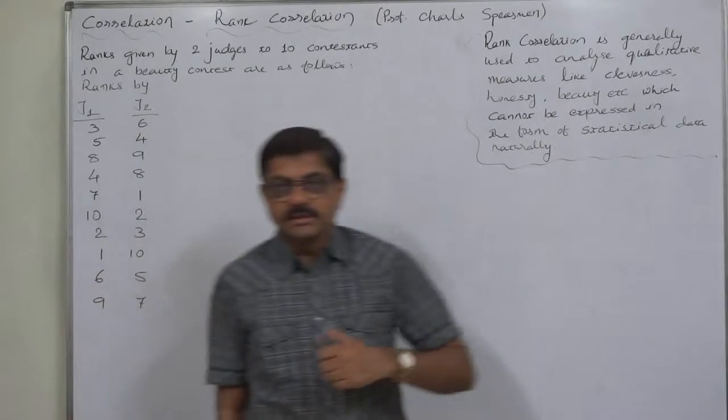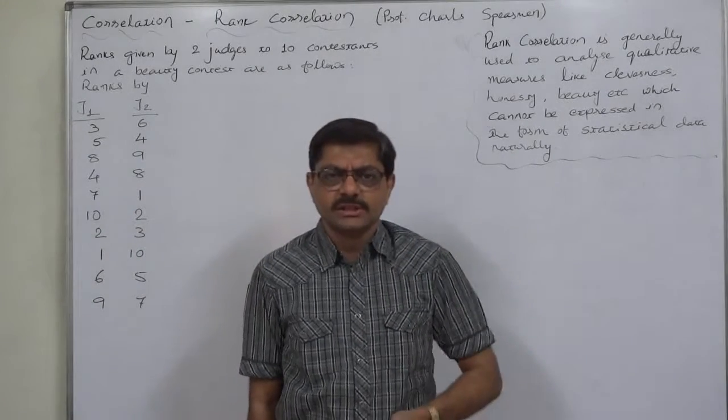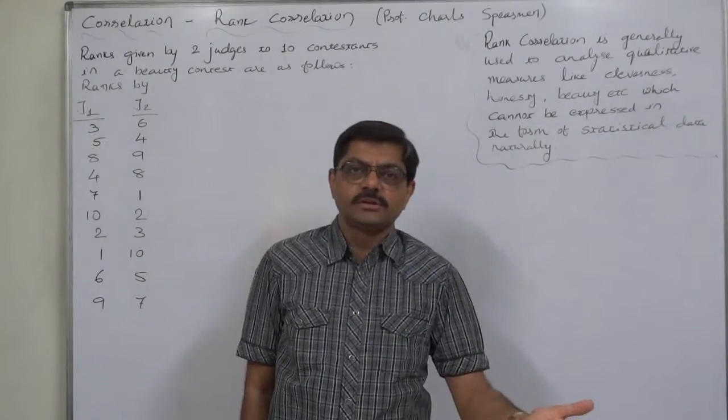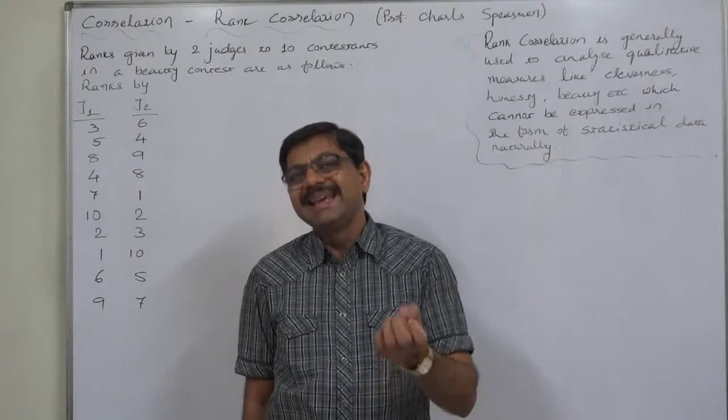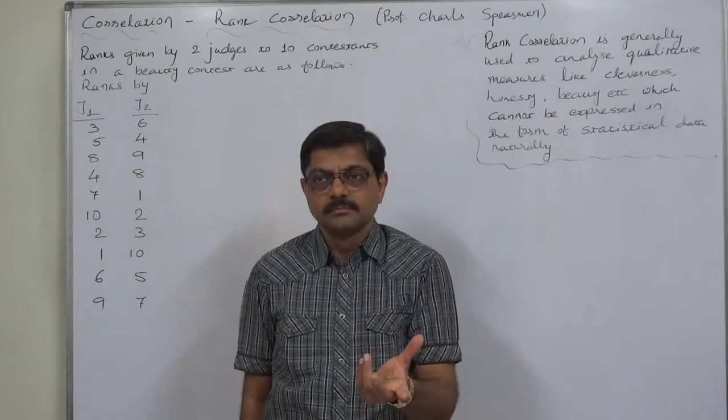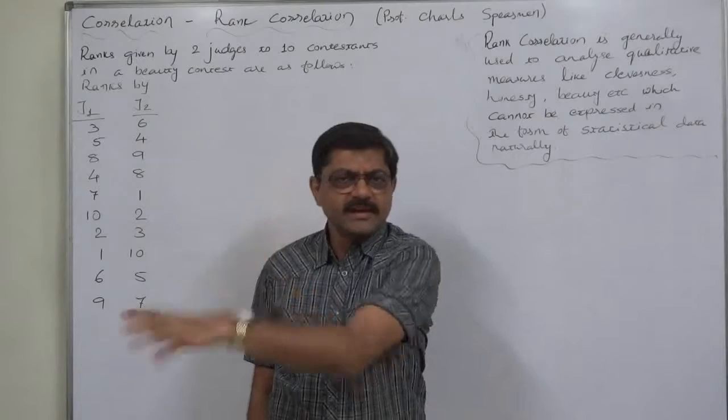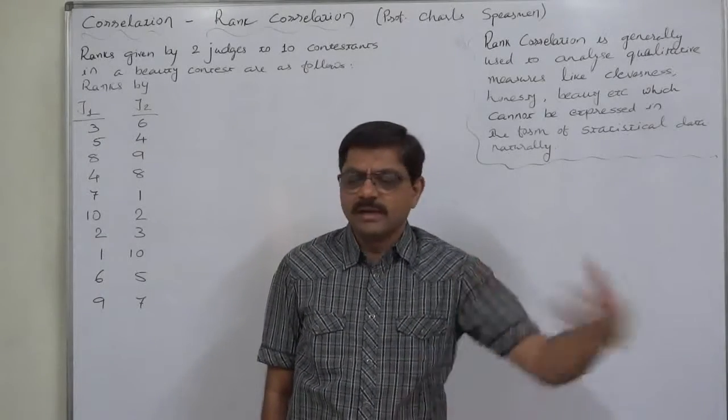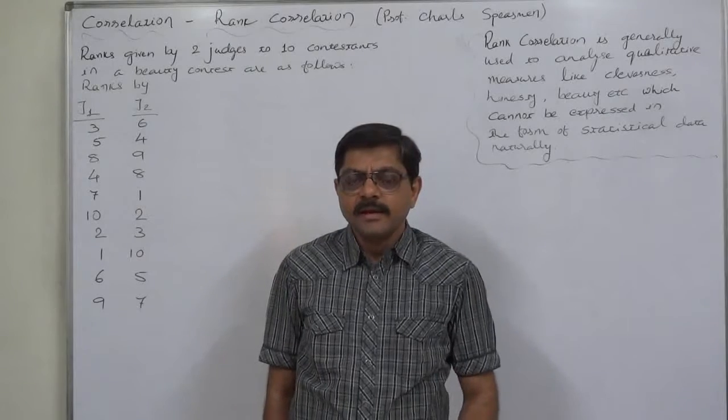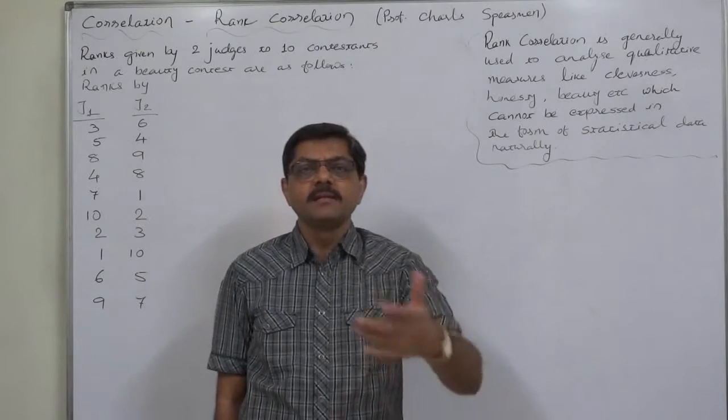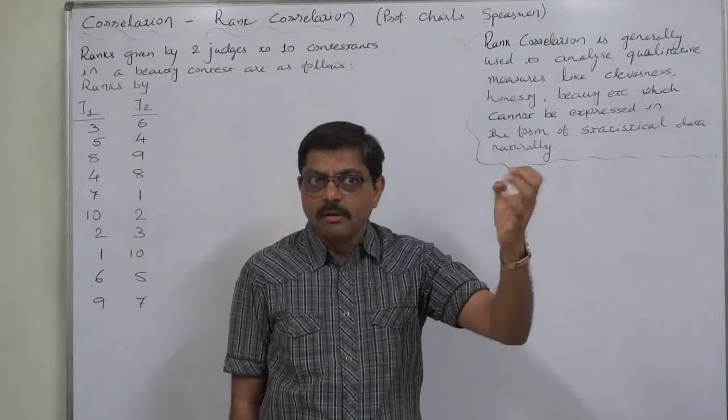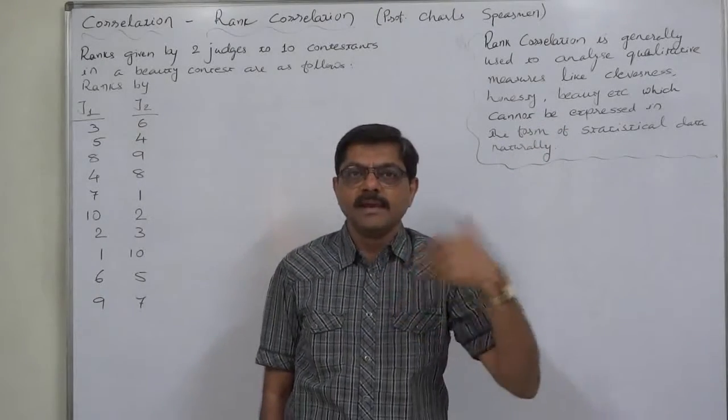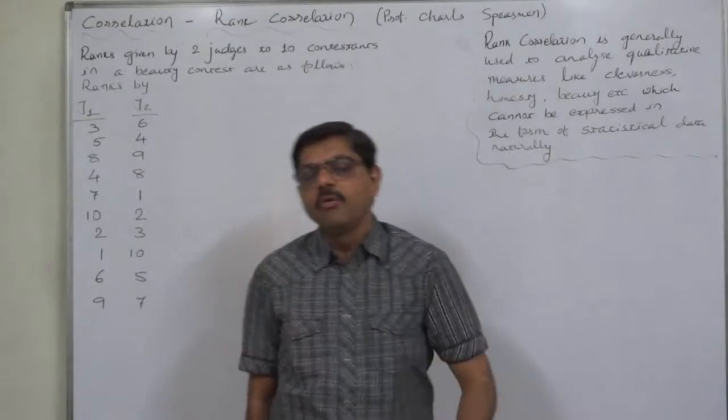That means some emotional touch is there. How can we measure beauty of some person in numbers? Though there are some numbers for standardization of beauty, but leave them. In a beauty contest, how can the judges judge about the beauty of various contestants and analyze them?